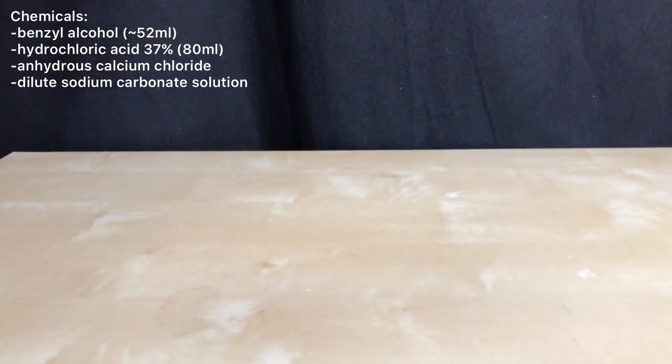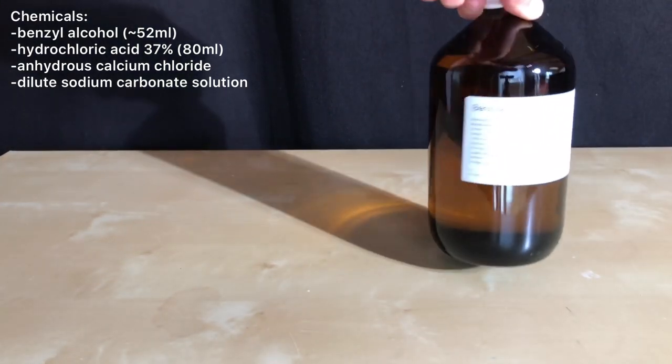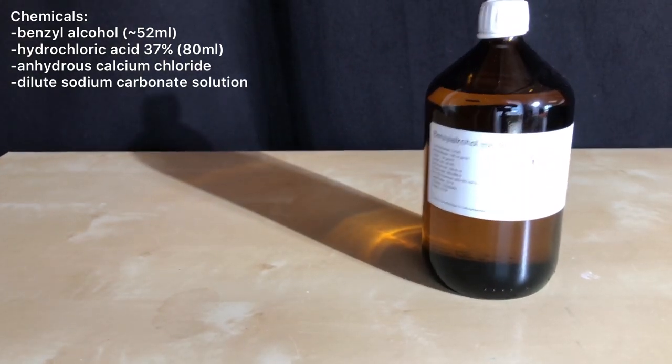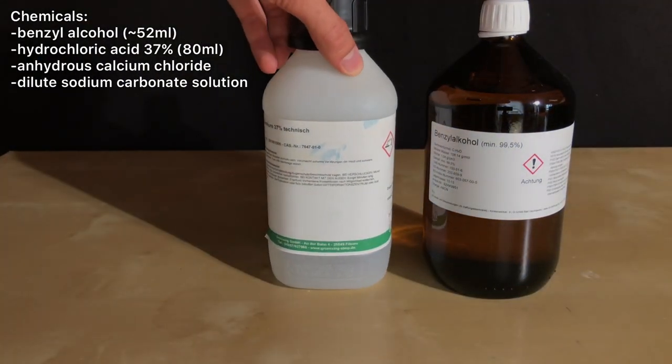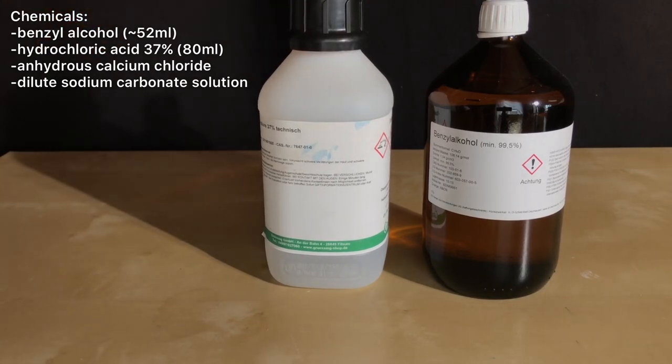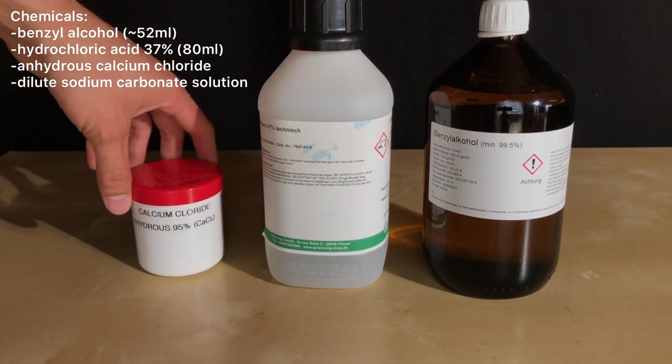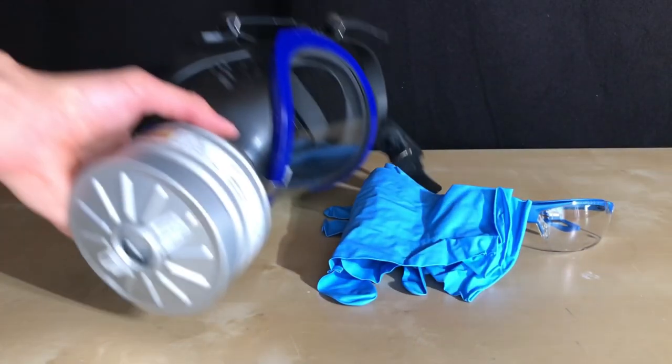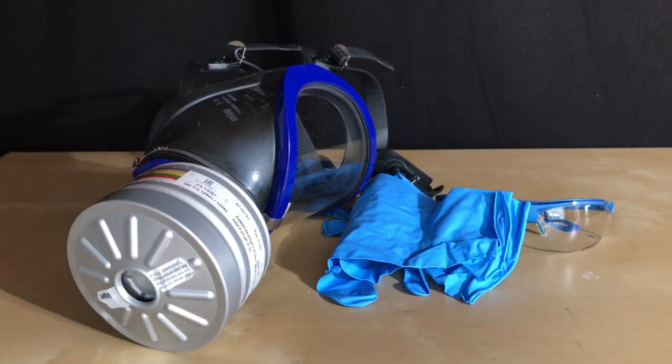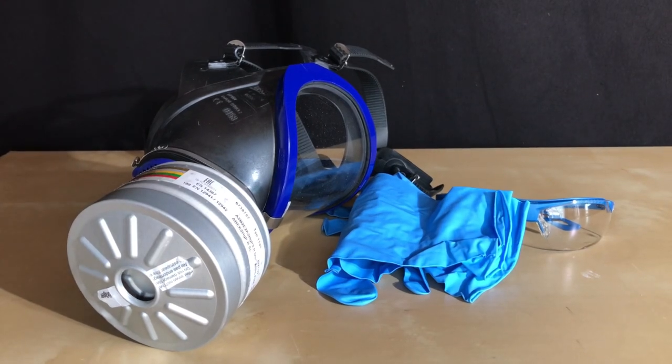The chemicals needed for today's preparation are around 52 ml of Benzyl Alcohol, 80 ml of 37% hydrochloric acid, which represents a huge excess in hydrochloric acid, and Sodium Carbonate Solution. Benzyl Chloride is toxic and a potent lacrimator. Therefore a gas mask and nitrile gloves will be worn. The preparation will even be conducted in a very well ventilated area.